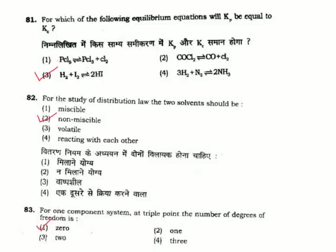Question 83: For a one-component system at the triple point, the number of degrees of freedom is — the degree of freedom will be 0, because the degree of freedom is n−1, and n = 1 for a single component system, so n−1 = 0.